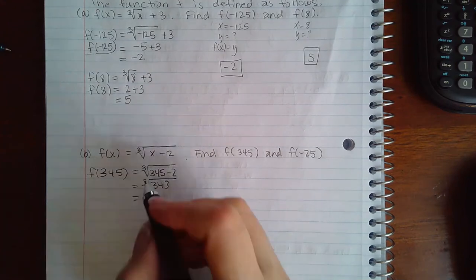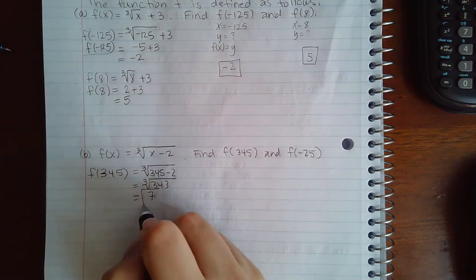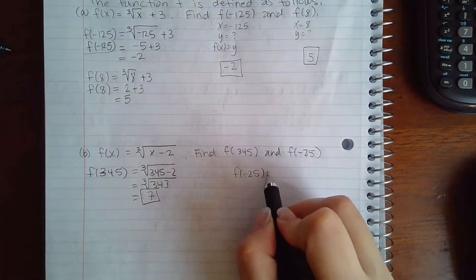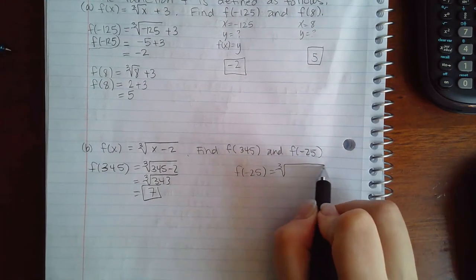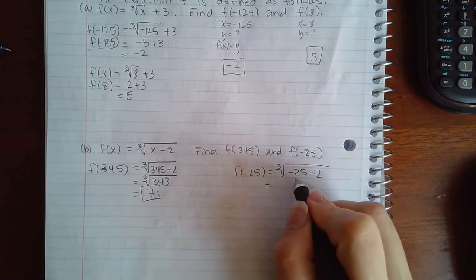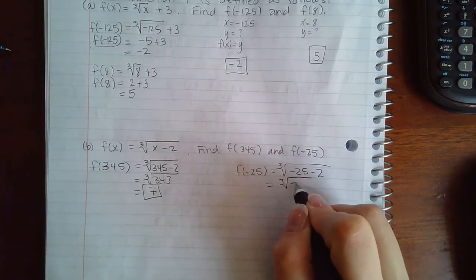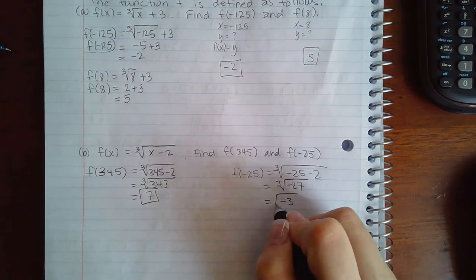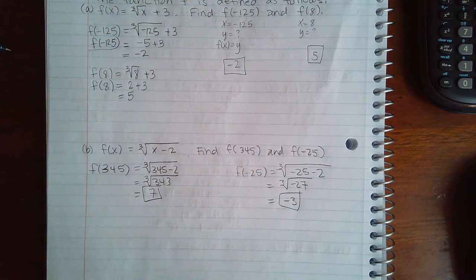f(-25) means to plug in -25 for x. If I evaluate this, I get -27, which is -3. So that's the y value.